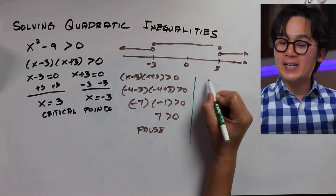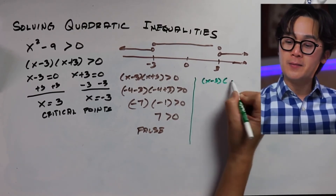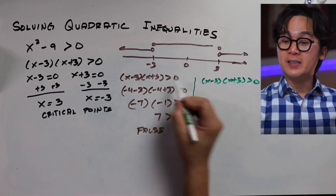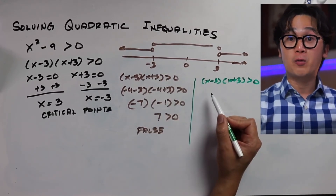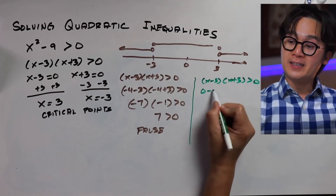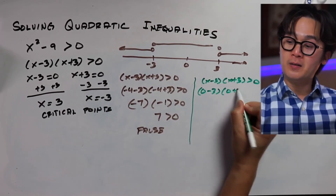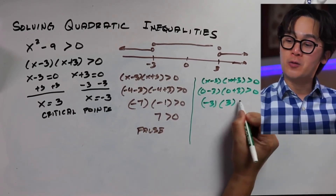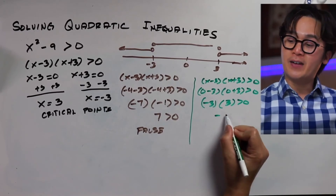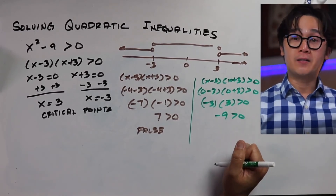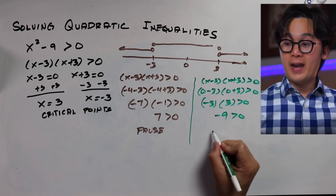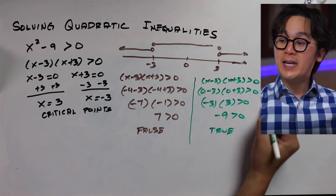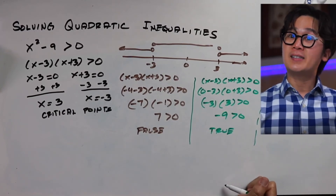For the second partition — between negative 3 and 3 — let's use x equals 0. We get 0 minus 3 times 0 plus 3, which is negative 3 times positive 3, equal to negative 9. Is negative 9 greater than 0? The answer is false — negative 9 is not greater than 0.